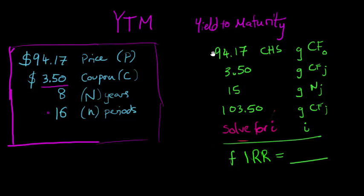It's the same bond as in the previous video, but instead of using the trial and error procedure to solve for the net present value equal to zero, which would give us our internal rate of return, I'm going to use the calculator to solve directly for the internal rate of return.